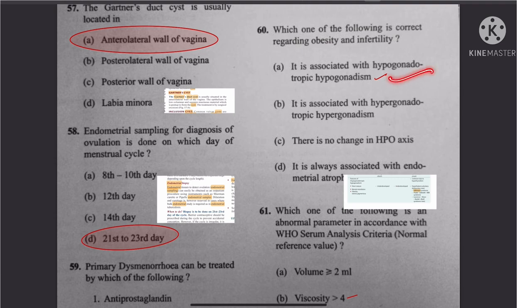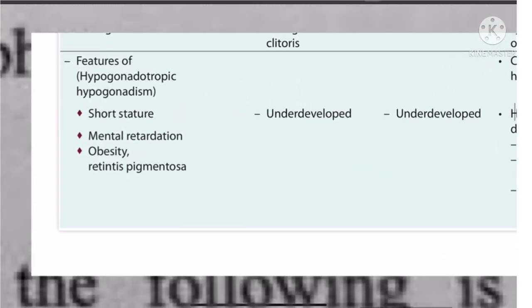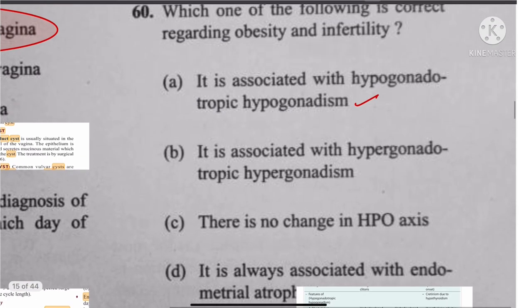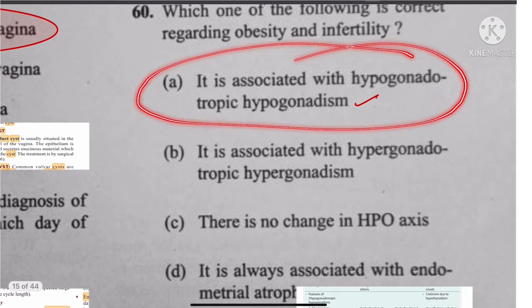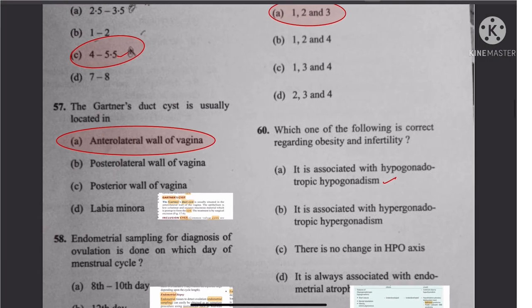Question 60: Regarding obesity and infertility — infertility can be associated with obesity, but the first option is correct because it mentions features of hypogonadotropic hypogonadism associated with obesity. The answer is hypogonadotropic hypogonadism. I hope all answers are clear. UPSC considers what is written in Datta, and I have provided screenshots from the book. All the best.